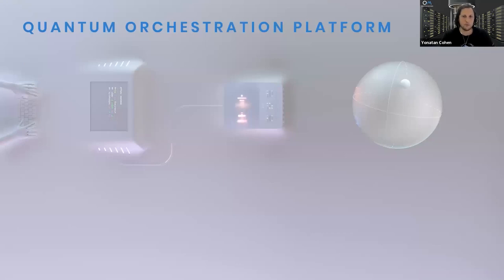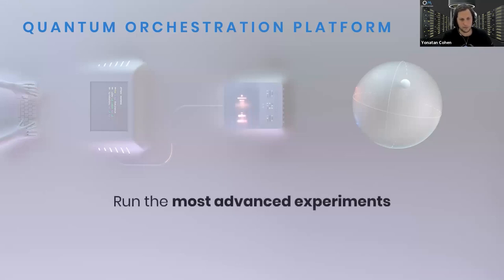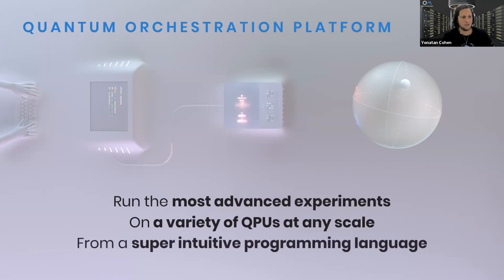We developed what we call the quantum orchestration platform, an integrated hardware and software system that allows you to do three things: First, run the most advanced experiments. Second, run these experiments on a variety of QPUs at any scale. Third, do that all from a super intuitive programming language we call QUA.